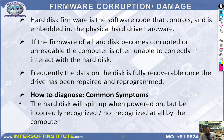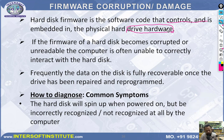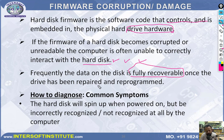Now, firmware issues: hard disk firmware is a software code that controls and is embedded in the physical hard drive hardware — it controls the hardware. If firmware is damaged, it cannot control the hardware. If the firmware of the hard disk becomes corrupted or unreadable, the computer is often unable to correctly interact with the hard disk, so data will not be shown or read. If sectors are accessible, data on the disk can be fully recovered once the drive has been repaired and reprogrammed.